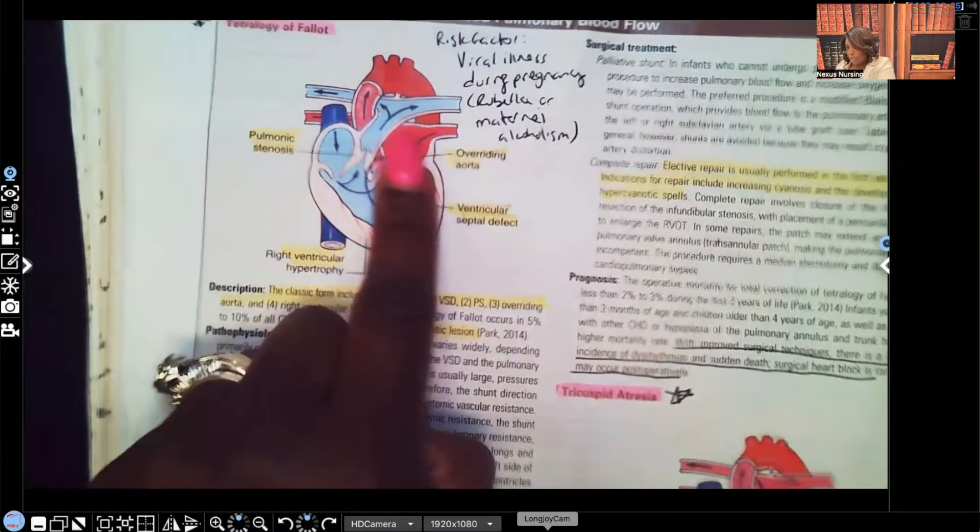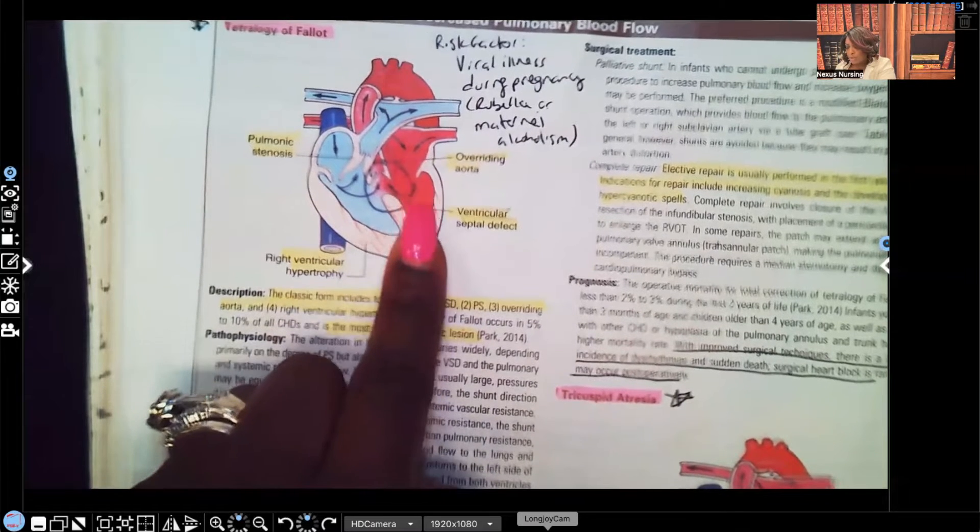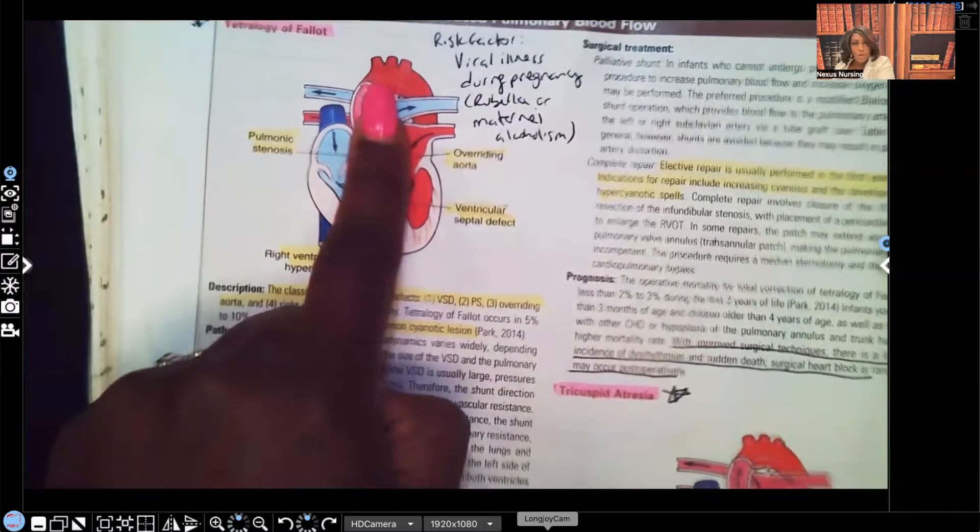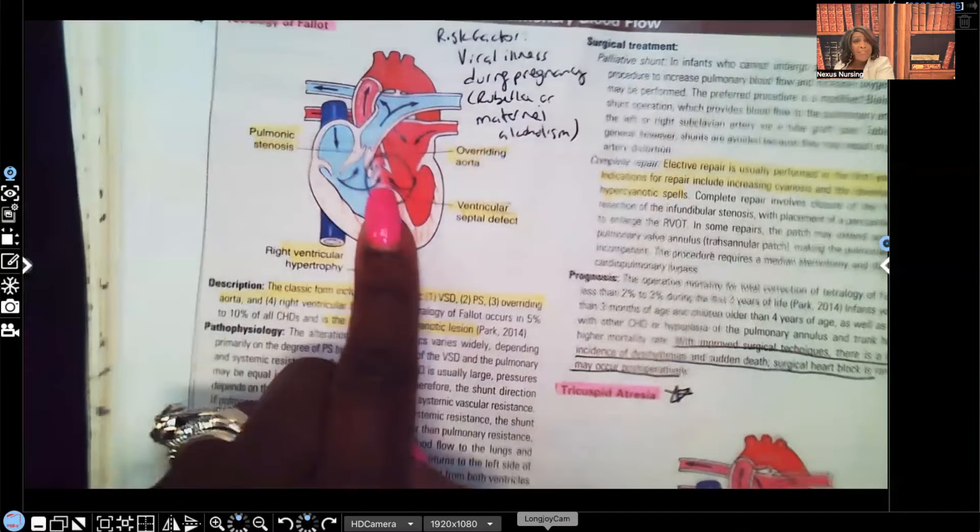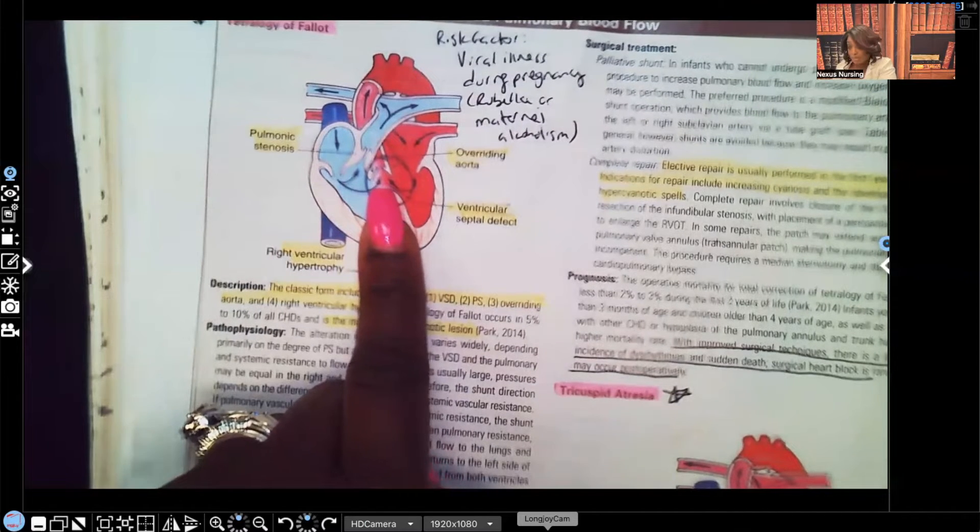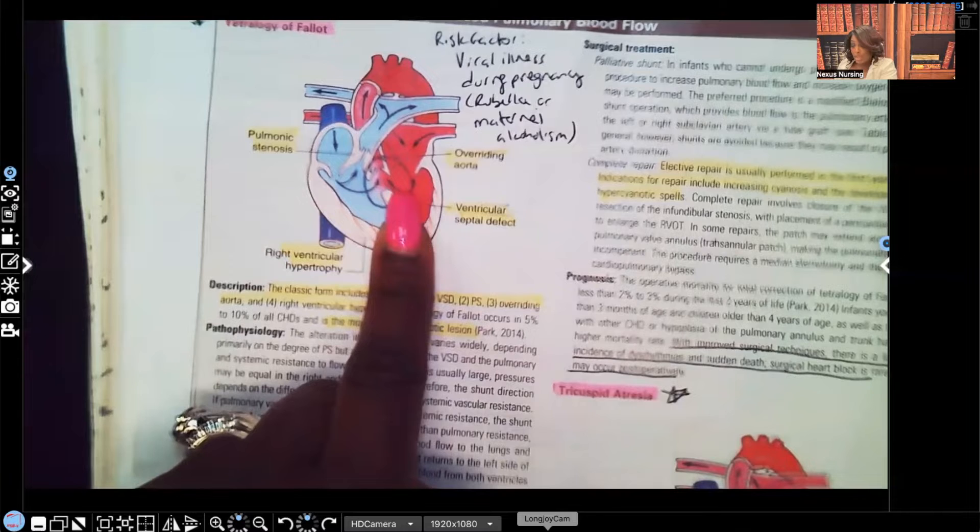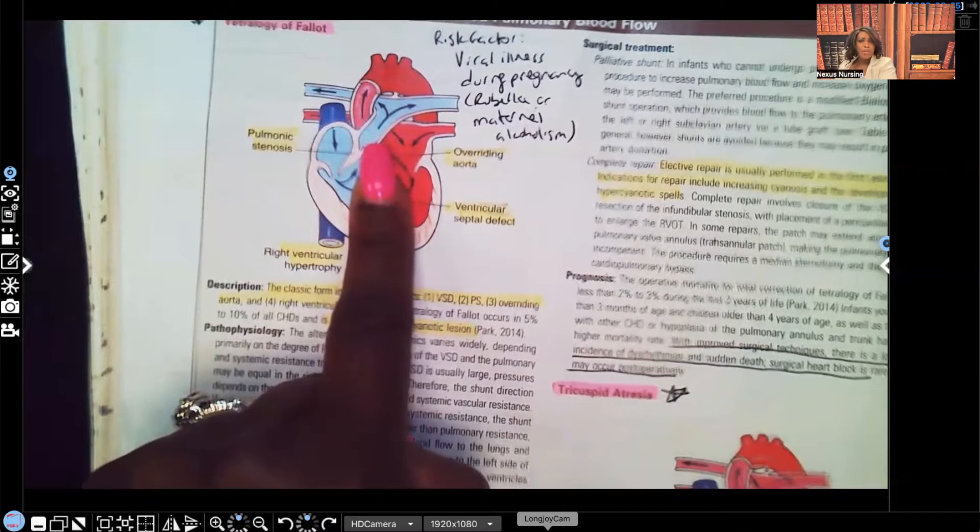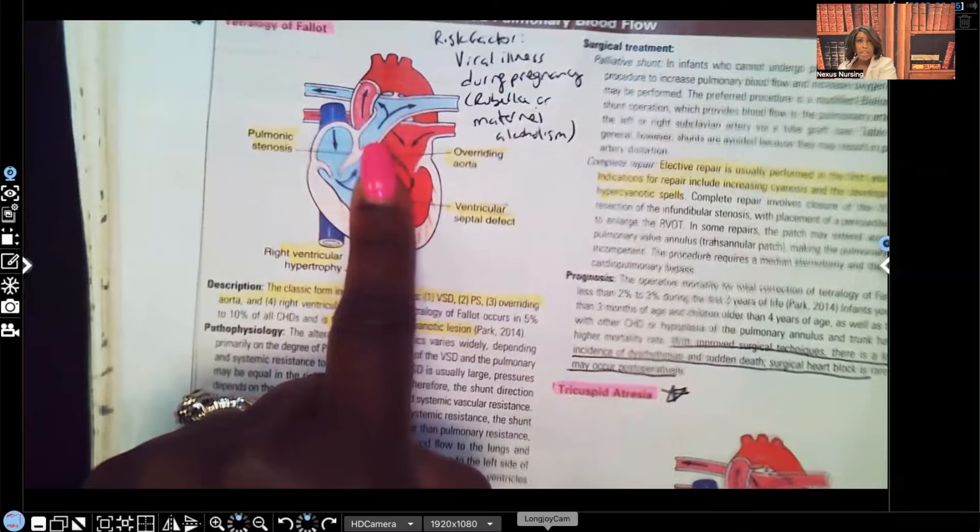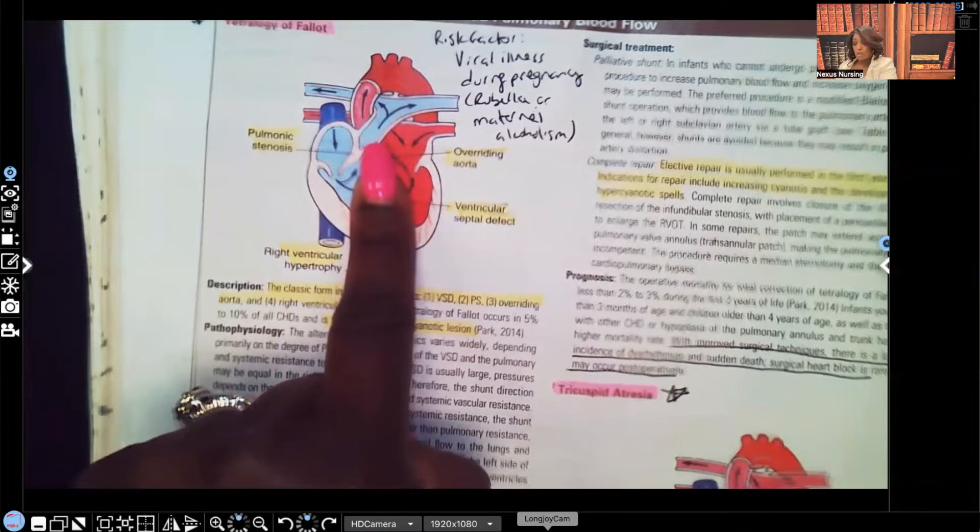Some of that unoxygenated or deoxygenated blood is mixing with the oxygenated blood. Because remember here goes the oxygenated blood, goes to the atrium, ventricle, and supposed to be going through here through the aorta to go out to the body to perfuse all of the tissues. Now you have deoxygenated blood mixing with that oxygenated blood going out to the body.